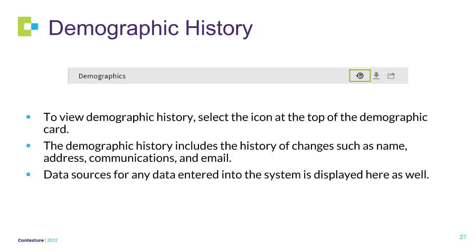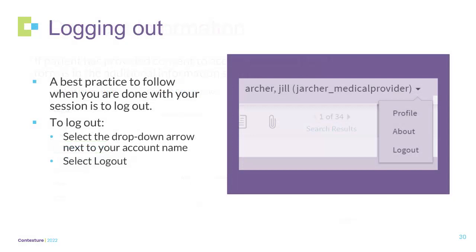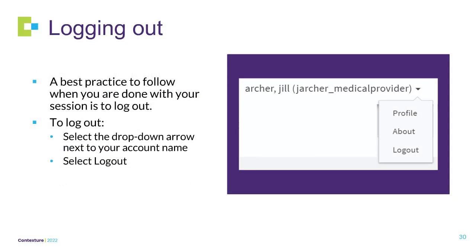The demographics history includes the history of changes such as name, address, communication, email, etc. Data sources for any data entered into the system are displayed here as well. If the patient has provided consent to access protected Part 2 data, the consent form is in the Additional Information section. Consent managers who wish to view instructions for uploading consent forms, please visit the Job Aids folder in the Learning Center and click on Consent. A best practice when you are done with your session is to log out. To log out, select the drop-down arrow next to your account name and select Log Out.